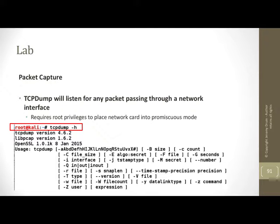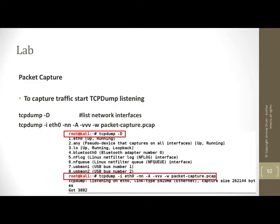To get help with tcpdump, just type tcpdump -h and you should see a usage screen with some options displayed below that. One of the first options is tcpdump -D, which lists the interfaces that tcpdump is capable of listening on.